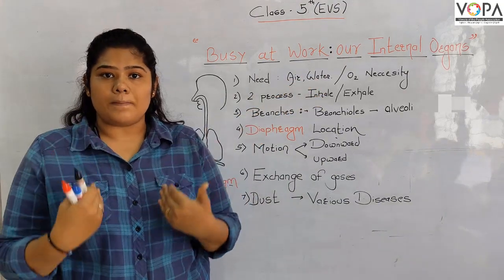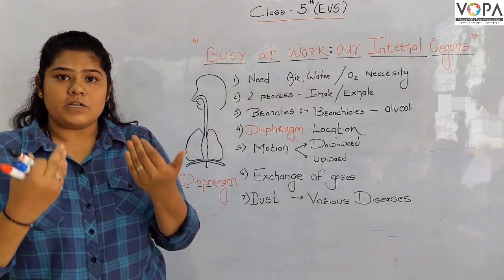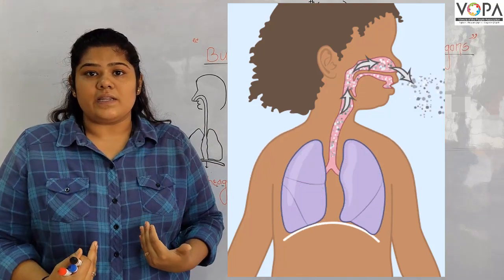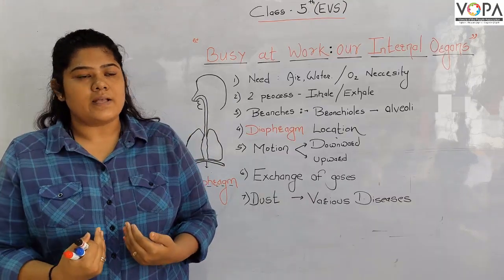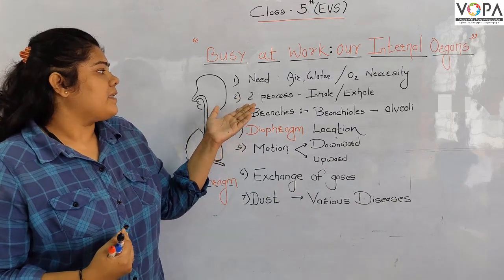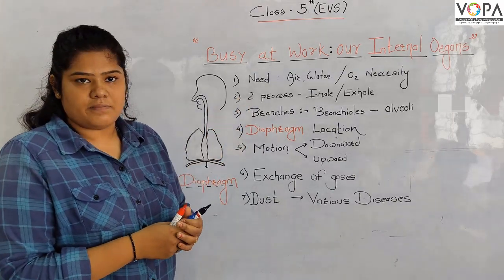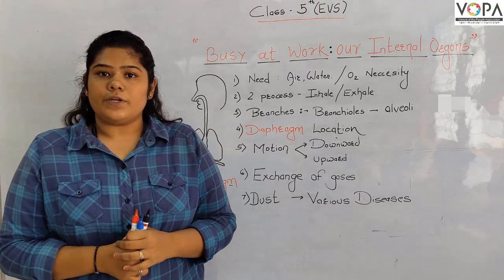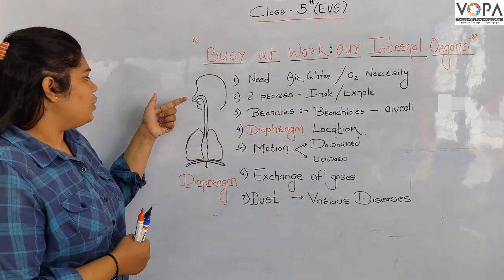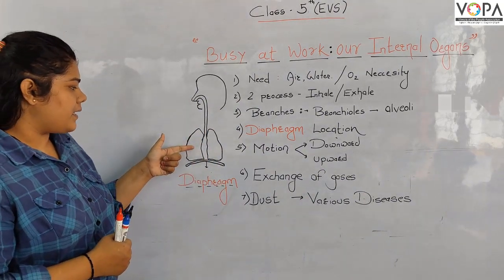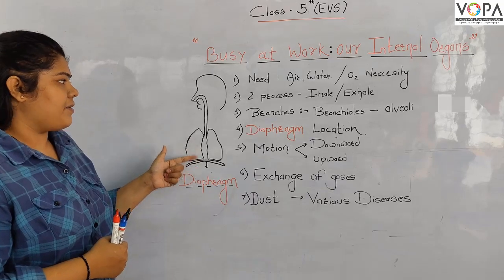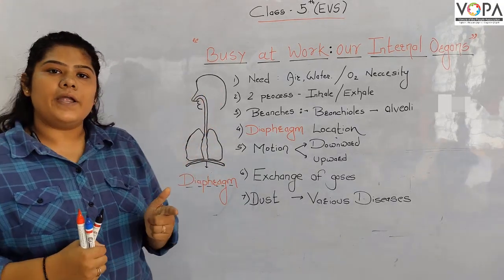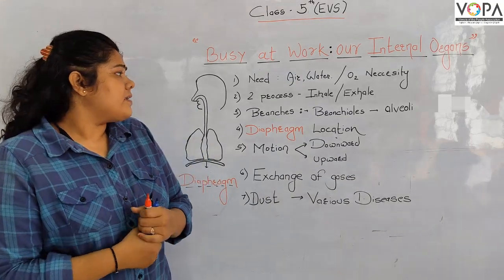Every day during respiration, the air that goes in — if we look at our respiration system — the organs involved are the nose, then the lungs, then the diaphragm. We will look at all these things, but first let us see the introduction.